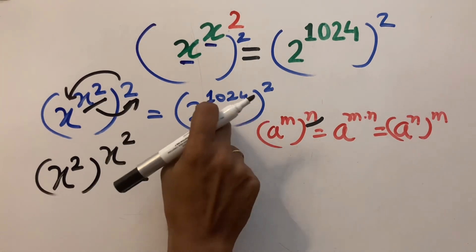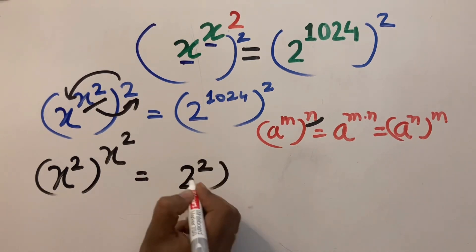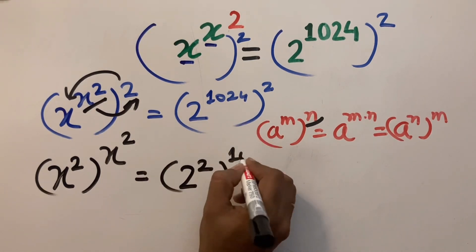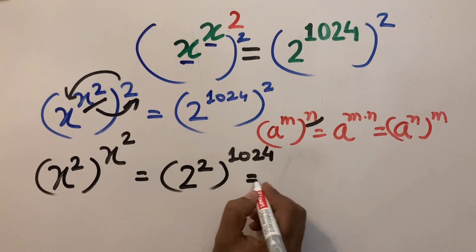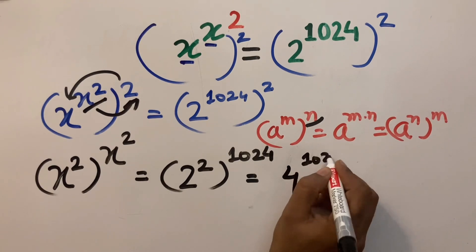Similarly, now rearranging this, this becomes 2 to the power 2 to the power 1024, which is also equal to 4 to the power 1024.